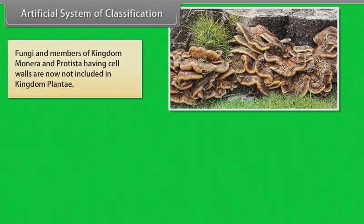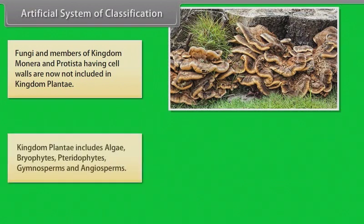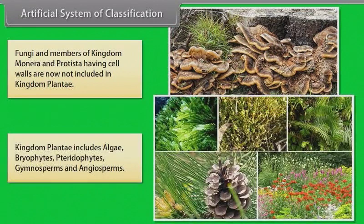Fungi and members of Kingdom Monera and Protista having cell walls are now not included in Kingdom Plantae. Kingdom Plantae includes algae, Bryophytes, Pteridophytes, Gymnosperms, and Angiosperms.